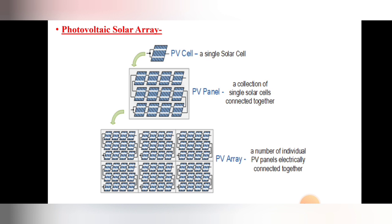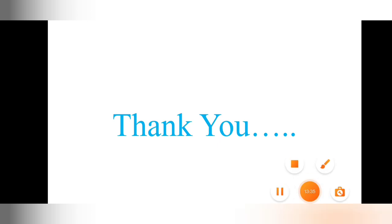In today's lecture we have covered two topics. First, solar modules — we have seen three types: monocrystalline, polycrystalline, and thin film solar module. Along with that, we have seen what is the solar array or PV array, including its theory and diagrams. We will stop here for this lecture and continue the next topic in the next lecture. Thank you, friends.